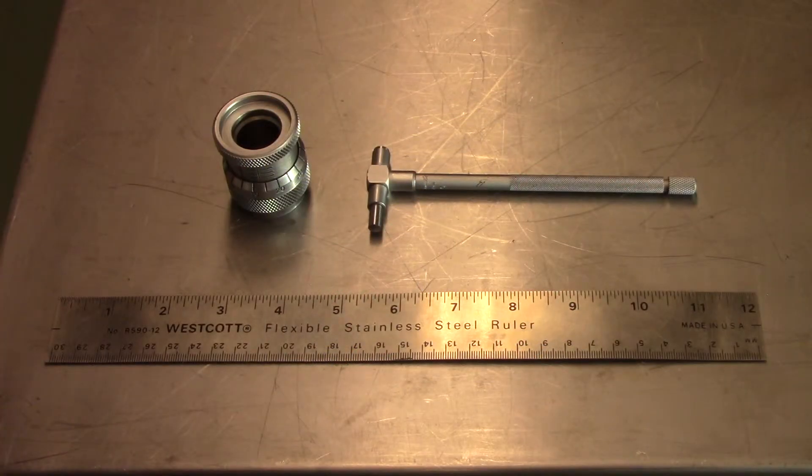Valve spring installed height can be measured using a ruler, a telescoping gauge, or a specialized micrometer.